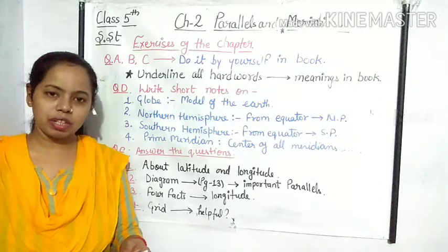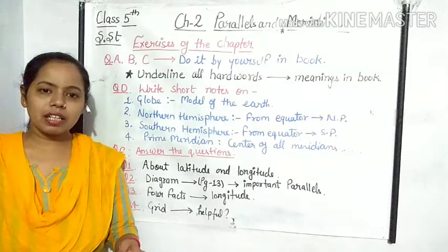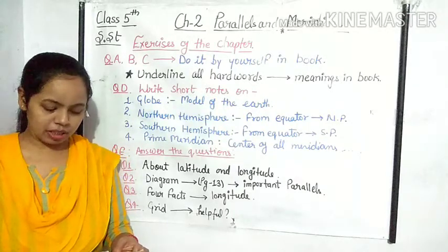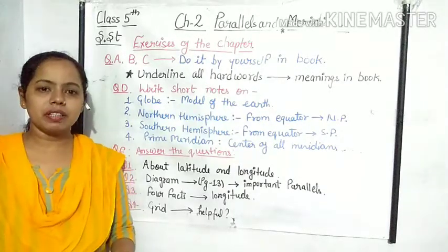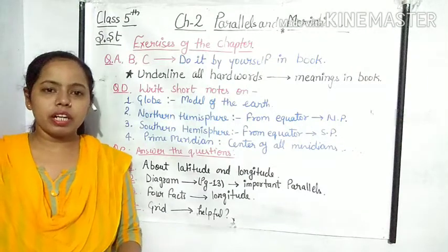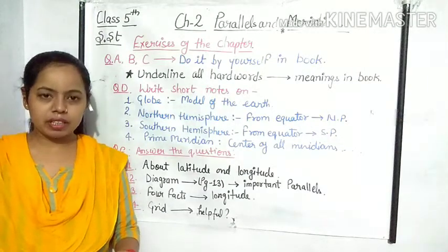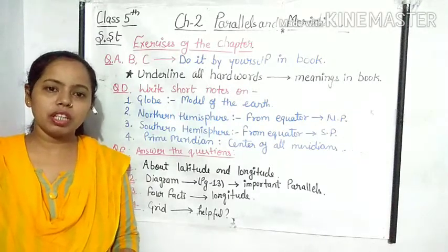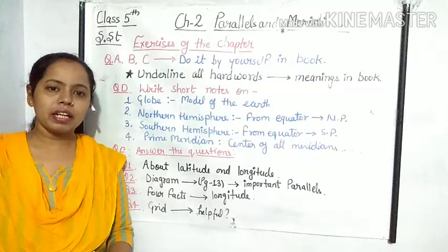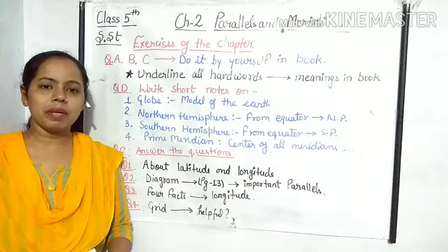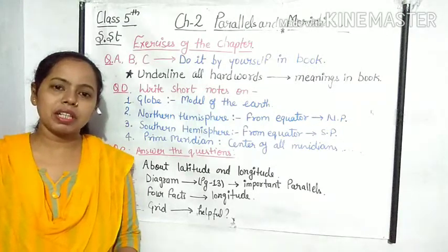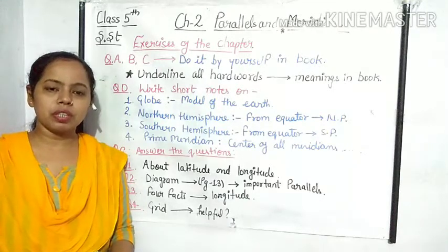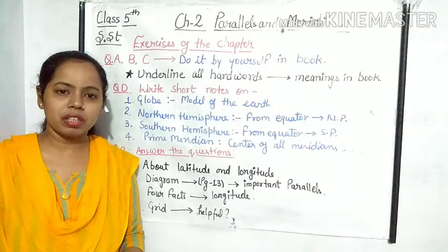The next term is Southern Hemisphere. From the equator to the south pole, we know the name of Southern Hemisphere. The next term is prime meridian. Prime meridian is known as the center of all the meridian lines. It helps us to number all the meridian lines and it divides the earth's surface into the eastern hemisphere and western hemisphere.